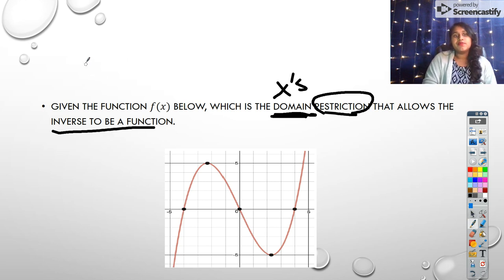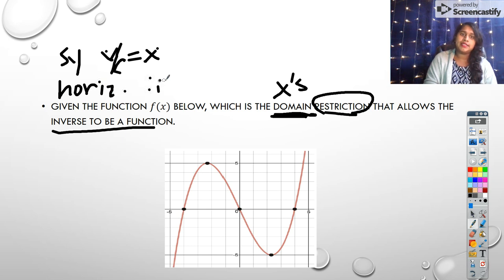Well, what do we know about inverses? Inverses have symmetry with respect to y equals x. But how do we test them? We test them using the horizontal line test.